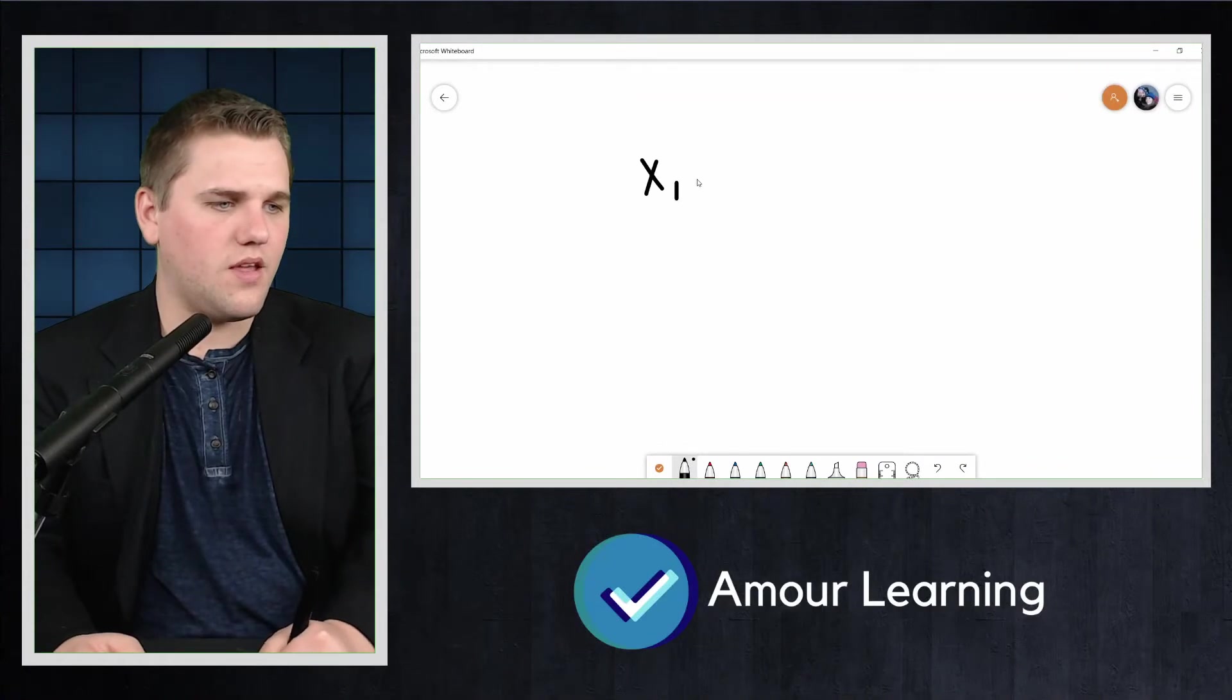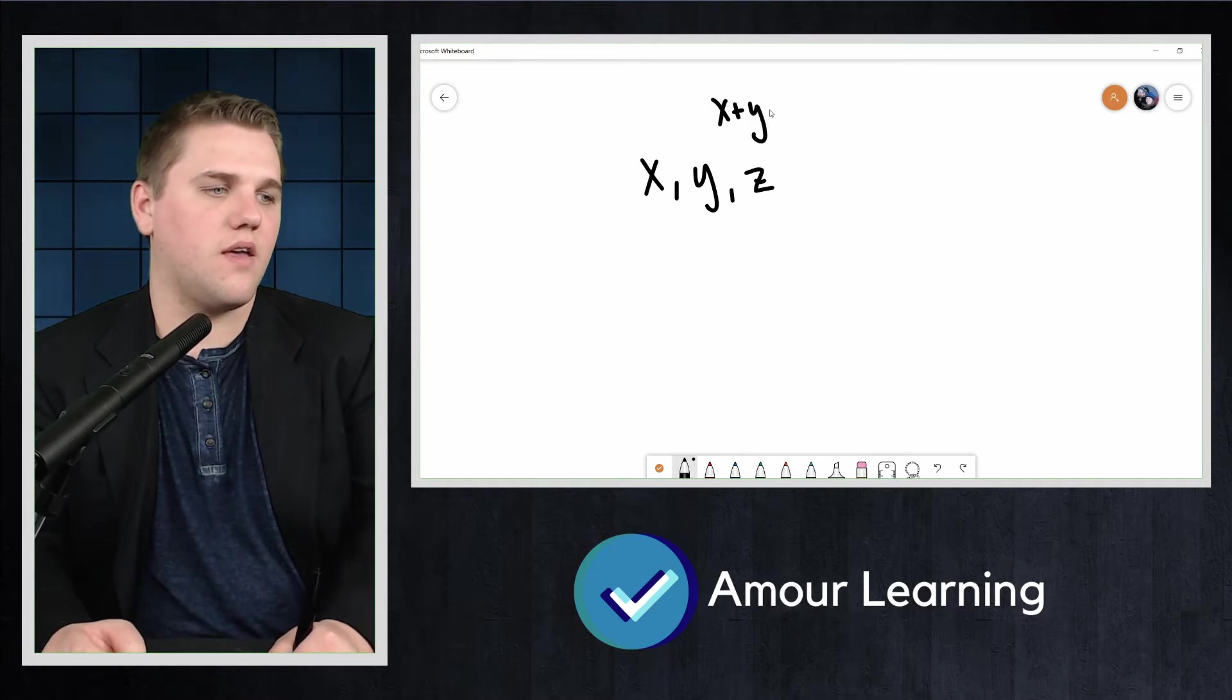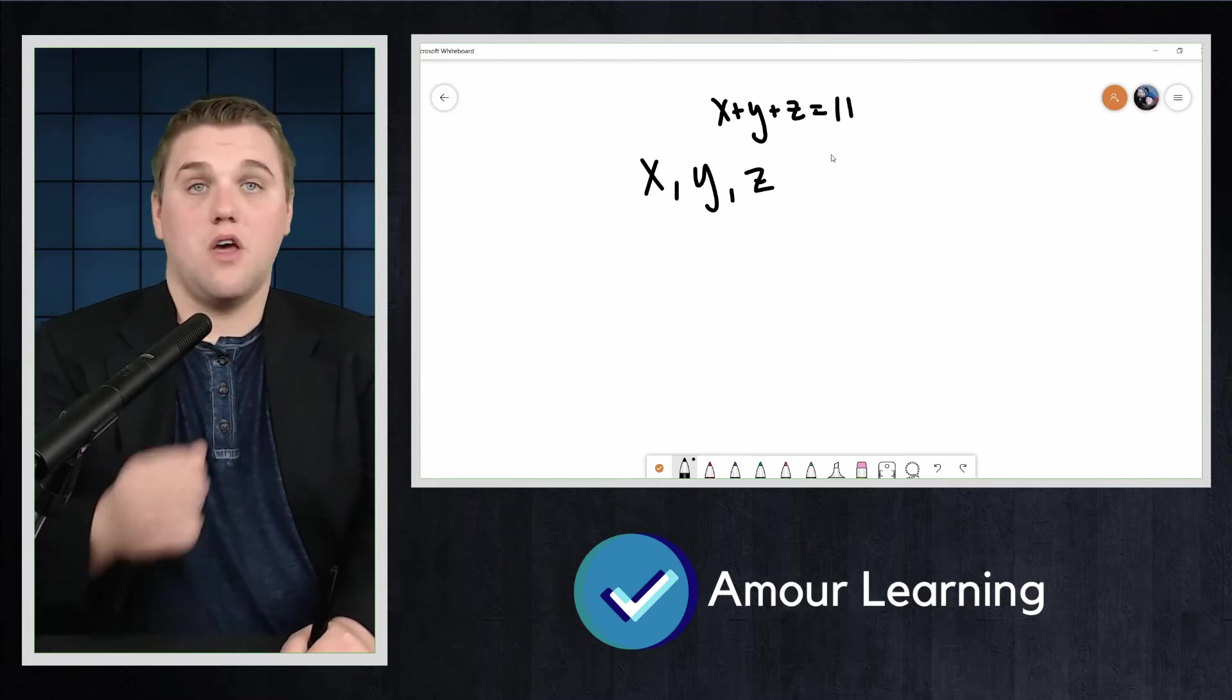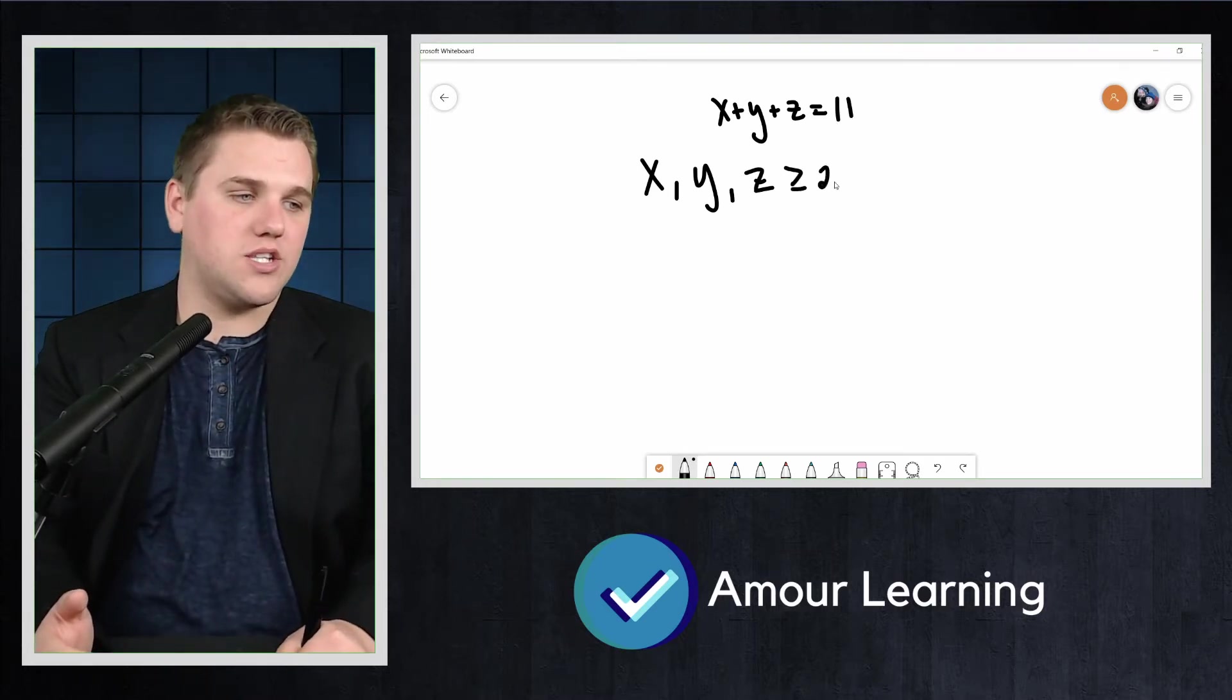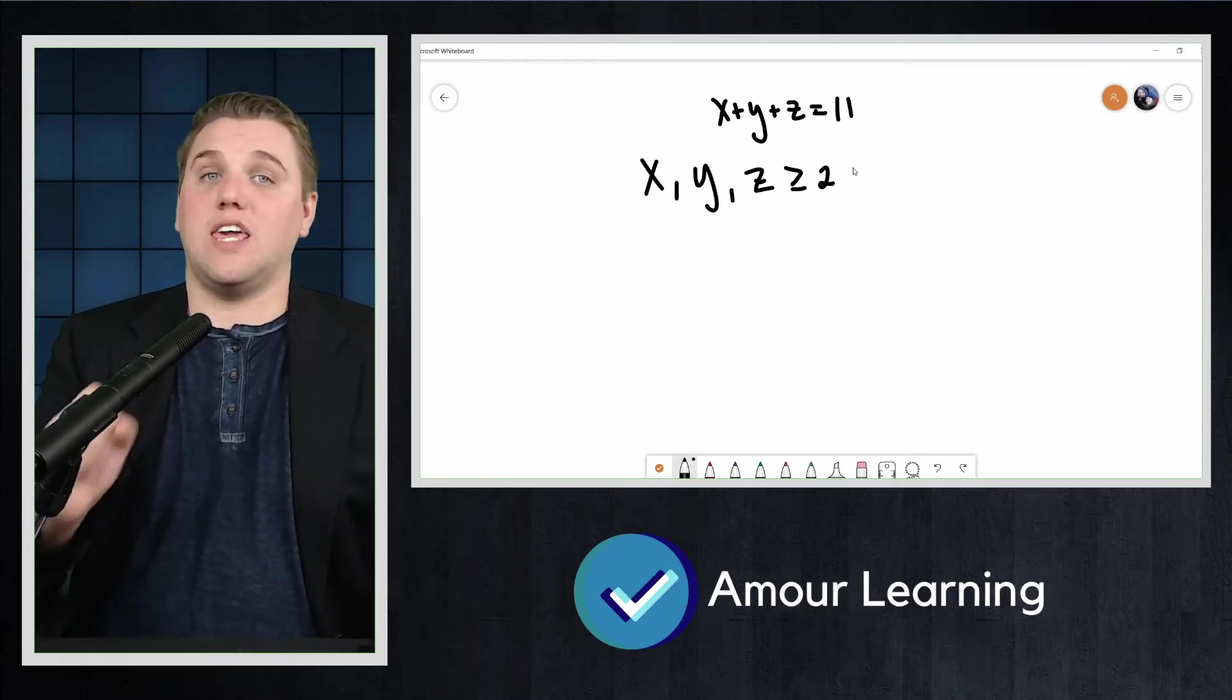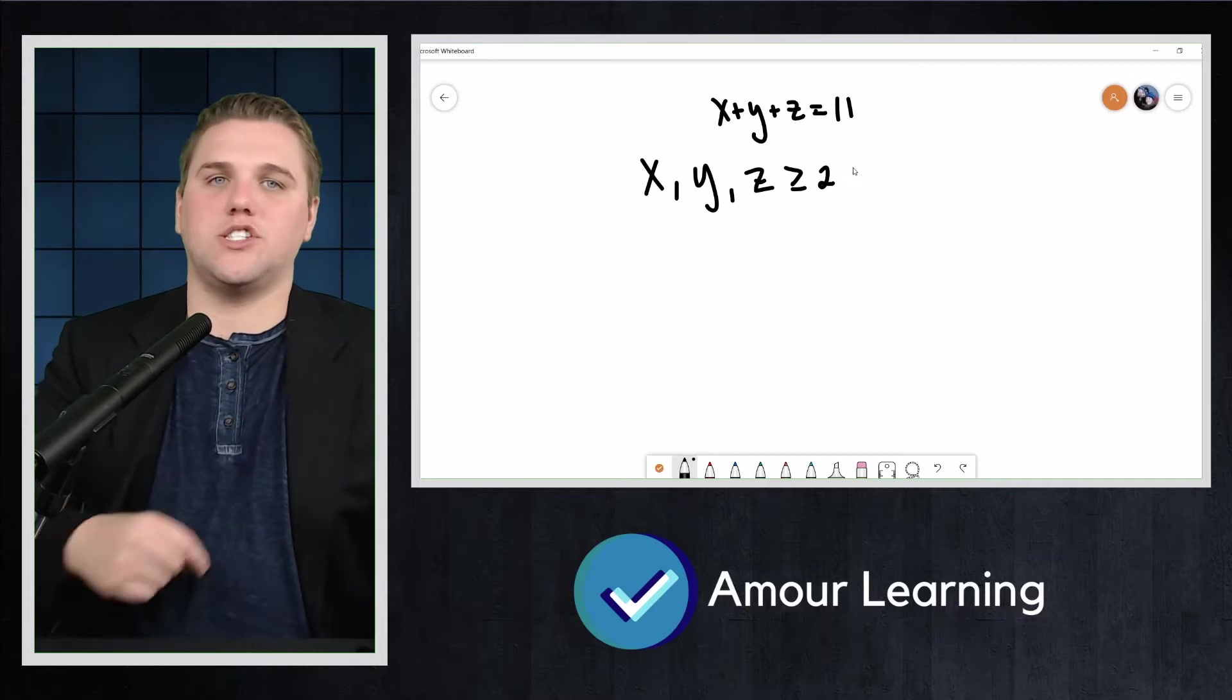A relatively easy modification allows us to put a lower bound restriction on these problems. Perhaps each kid must get at least two cookies, or we specify that x, y, and z when we have x plus y plus z equals 11 or 13, we might specify that these are all at least two, for example. This was done by first assigning each kid or variable two cookies or units, and then distributing the rest using stars and bars.